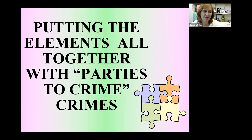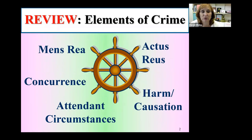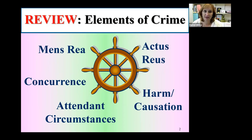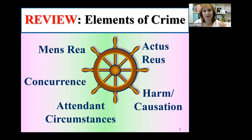We're putting everything together that we learned and learning that systematic way of how to answer questions. A quick review: elements of crime. We spent multiple weeks talking about all of the elements of crime, and we're coming back to that because you're going to use these elements for specific crimes from now to the end of the semester. For every crime, you need all of the elements — it's like a wheel for criminal liability. Mens rea, actus rea, concurrence, harm, causation, and attendant circumstances. If a prosecutor cannot prove every one of those elements, the wheel of justice stops and you cannot prosecute them for that crime.